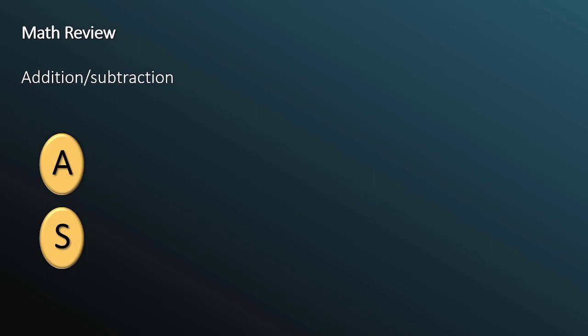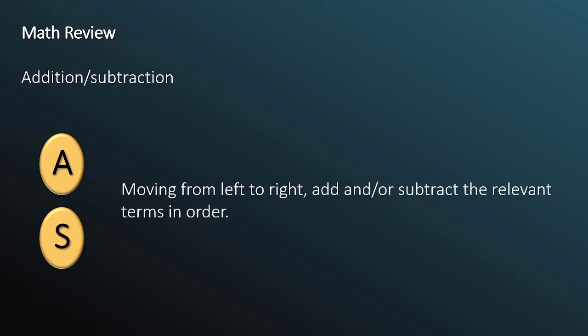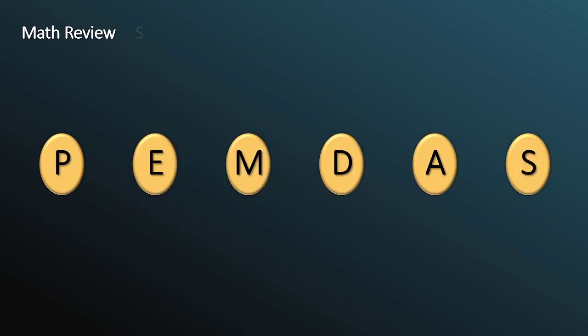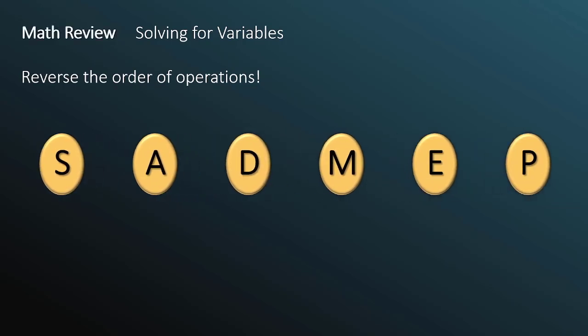Addition and subtraction. Again, moving from left to right, add and or subtract the relevant terms in order. Now, if you are solving for a variable, which is what we will do in this course, you will reverse the order of operations. I will show you what this looks like in practice.